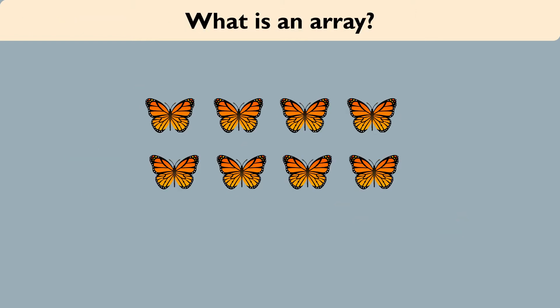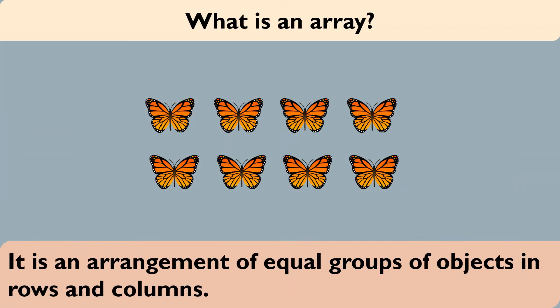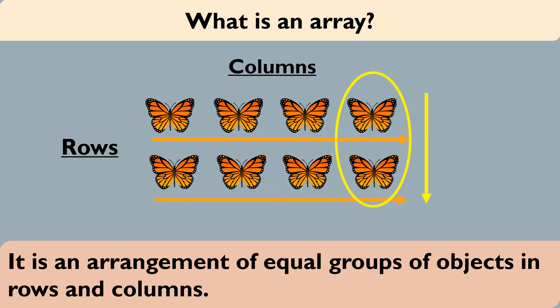What is an array? It is an arrangement of equal groups of objects in rows and columns. When we arrange objects or numbers horizontally, we get objects in rows. Rows go side by side. When we arrange the objects or numbers vertically, they are called columns. Columns go up and down.